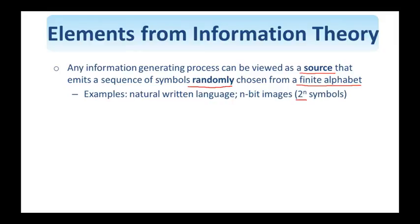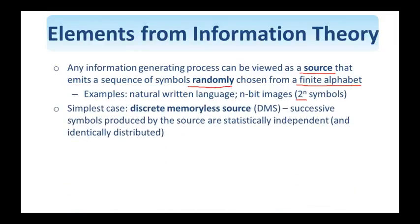Now, the simplest source we can model is one that is discrete and without memory—so it's a discrete memoryless source, or a DMS. The successive symbols generated by this source are IID. They're statistically independent and identically distributed.